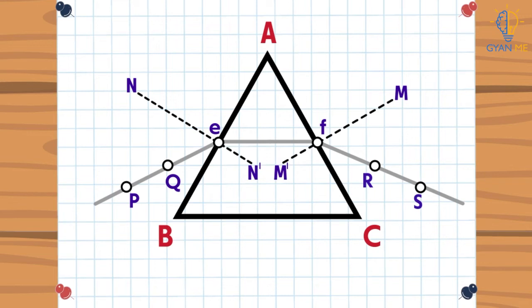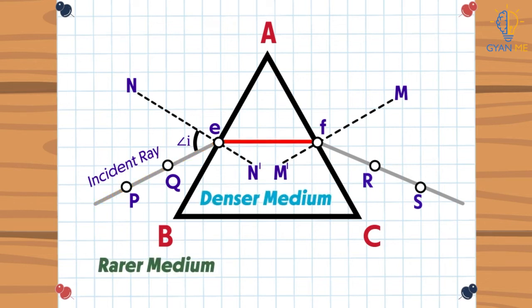This is the light ray just like a laser beam which was falling on the surface of the prism. It is called an incident ray. The angle formed by incident ray with this perpendicular we all know is nothing but angle of incidence, that is angle I. Now you already know that when light enters from rarer medium into denser medium, it bends towards the normal.